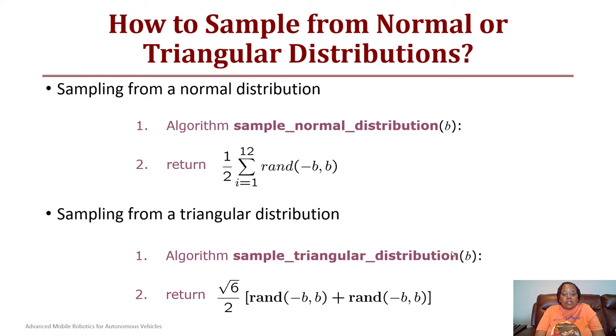For the triangular, you would return the square root of six over two, and you would have a random value between negative b and b plus a random value between negative b and b.